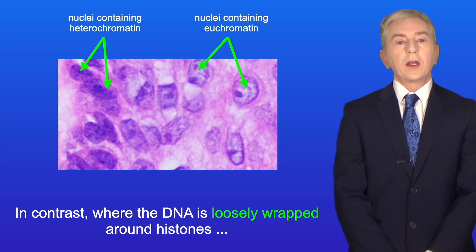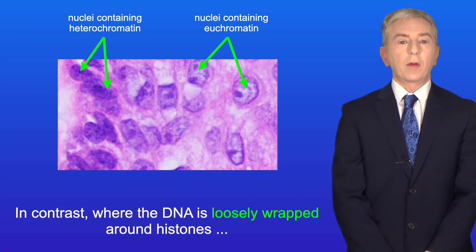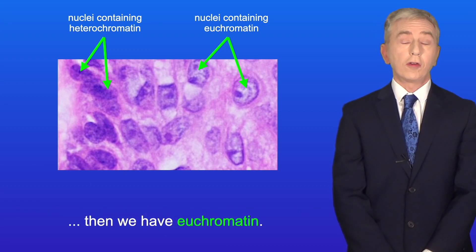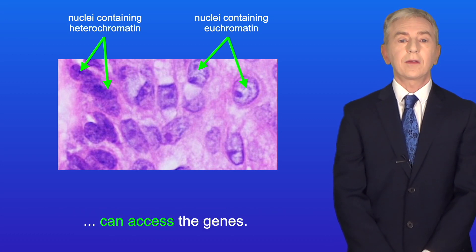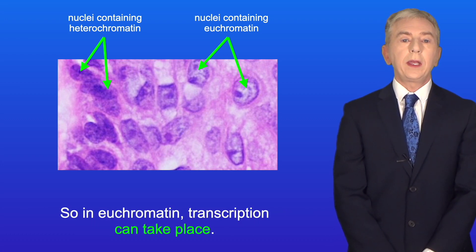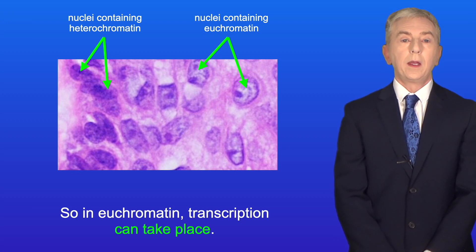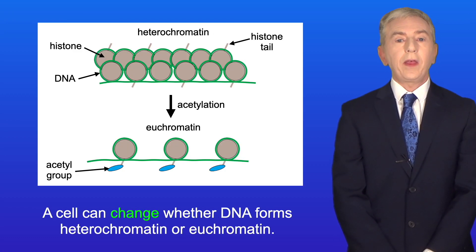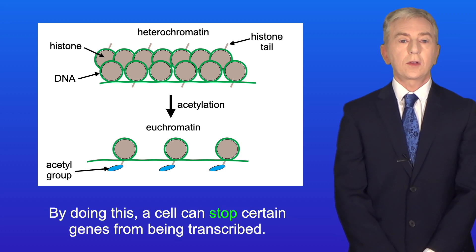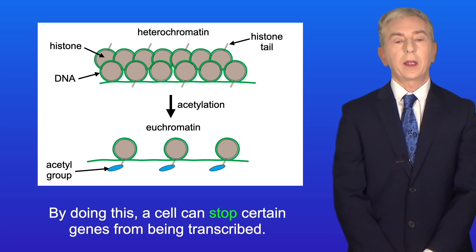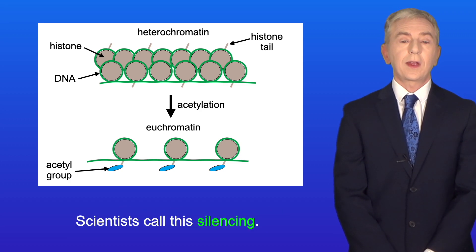In contrast, where the DNA is loosely wrapped around histones, we have euchromatin. In regions of euchromatin, RNA polymerase and transcription factors can access the genes, so transcription can take place. A cell can change whether DNA forms heterochromatin or euchromatin, and by doing this a cell can stop certain genes from being transcribed. Scientists call this silencing.